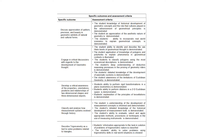Specific outcome three focuses on developing an awareness of the properties, orientations, positions, and relationships of two-dimensional shapes and three-dimensional objects. The assessment criteria include: the student's ability to perform rigid transformations in a plane, the ability to perform dilations in 2D Euclidean space, and the student's explanations of the principles of tessellations. The next specific outcome focuses on the classification and analysis of measurement systems throughout history.